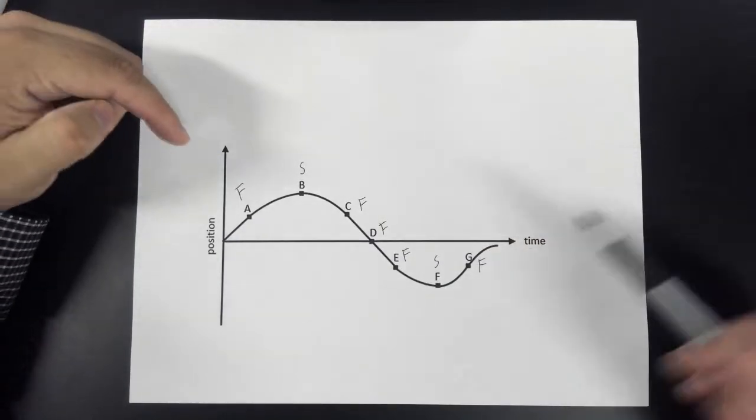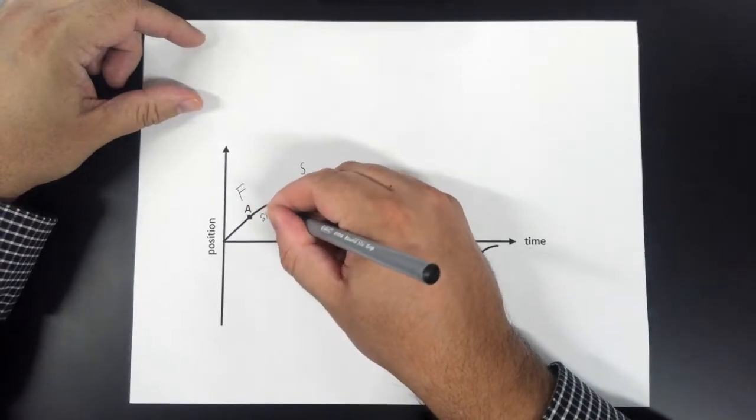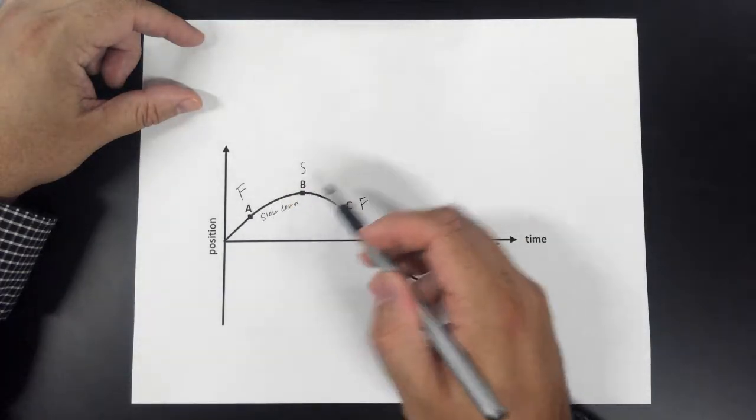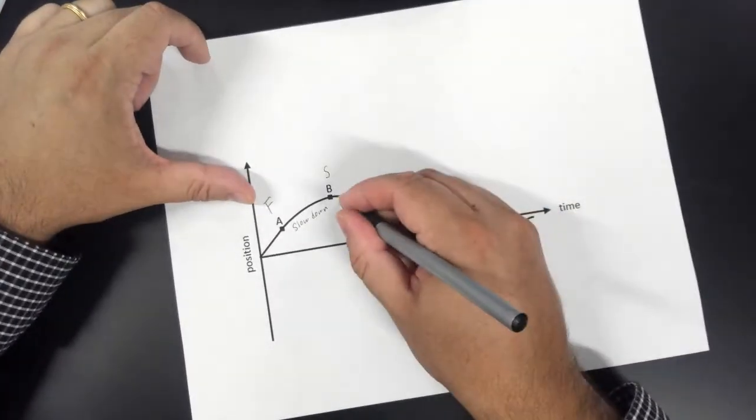That means anywhere you go from F to S, it's going to be a slow down. So here, it's going to slow down because the line is getting less and less steep. As we go down here, we're going from slow to fast. It's going to speed up.